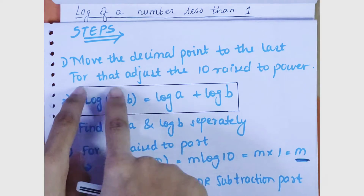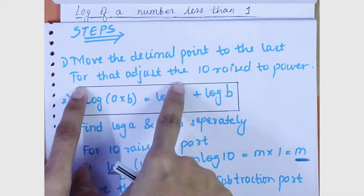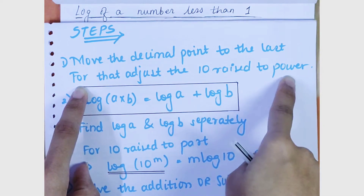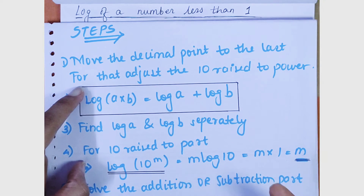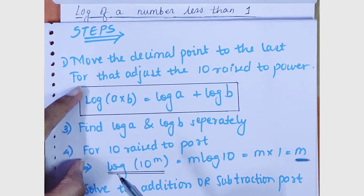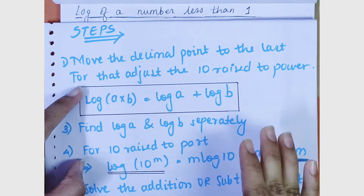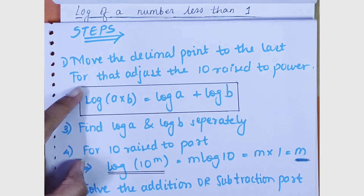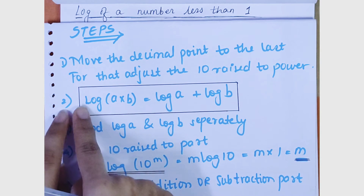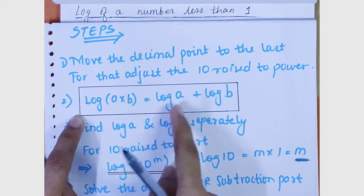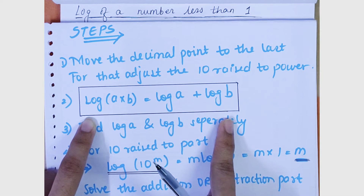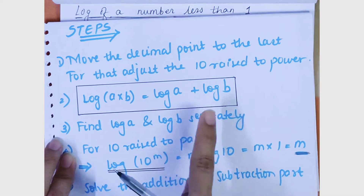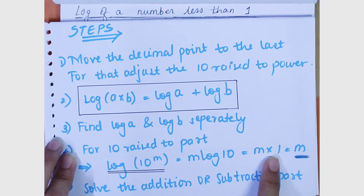The first step says: move the decimal point to the last and adjust the 10 raised to power accordingly. You won't fully understand until you see an example, which I'll solve for you. The second step says: log(a × b) = log a + log b. I'm sure you are familiar with this formula, and if not, remember it — it is very important and helpful.